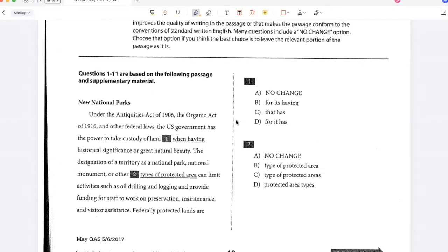Under the Antiquities Act of 1906, the Organic Act of 1916, and other federal laws, the U.S. government has the power to take custody of land when having historical significance or great natural beauty. Now I need to choose the correct option here. I'm saying the U.S. government has the power to take custody of land and that land has historical significance or great natural beauty. I should just say that has because that refers to the land. So option C should be the right answer.